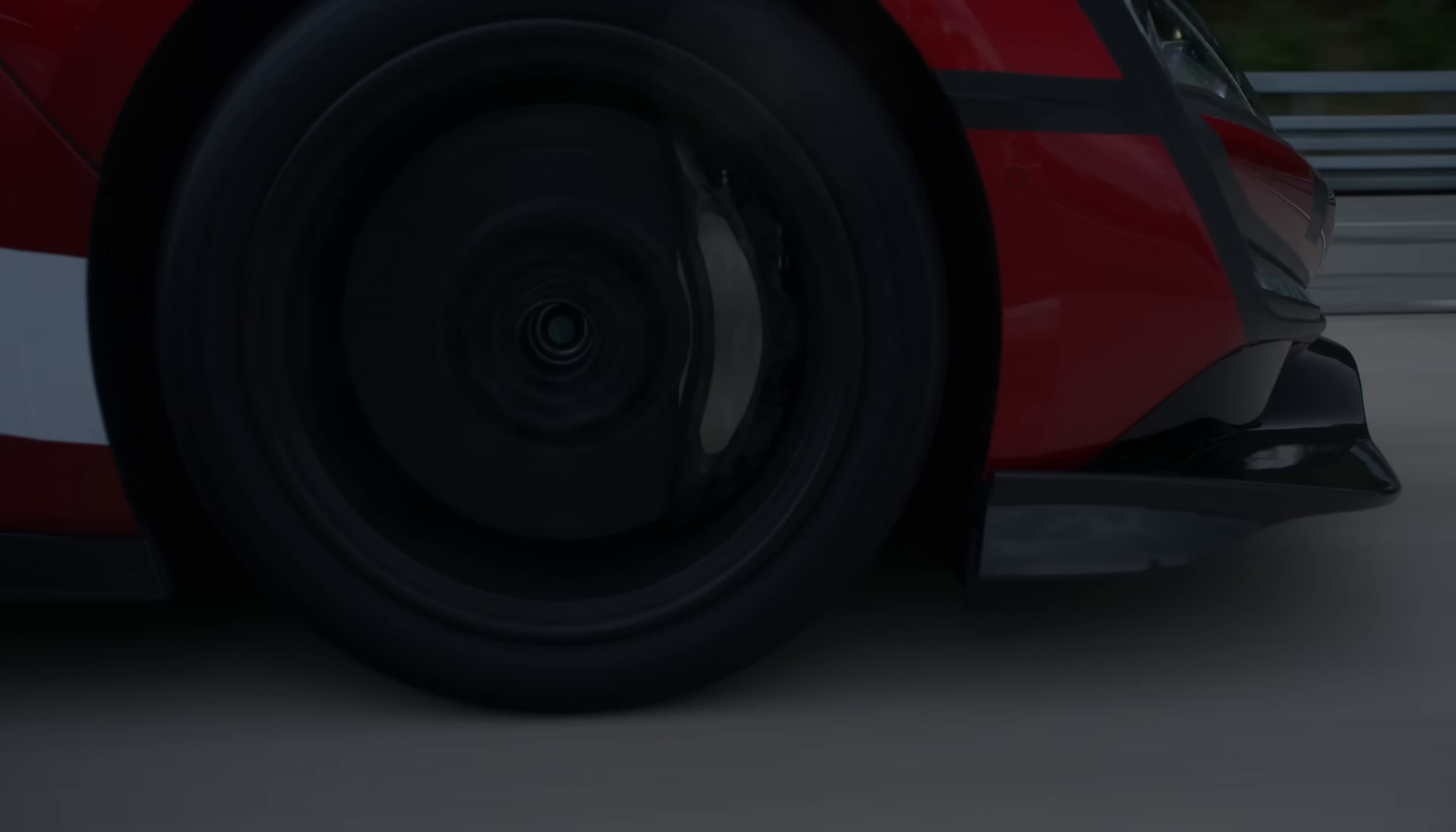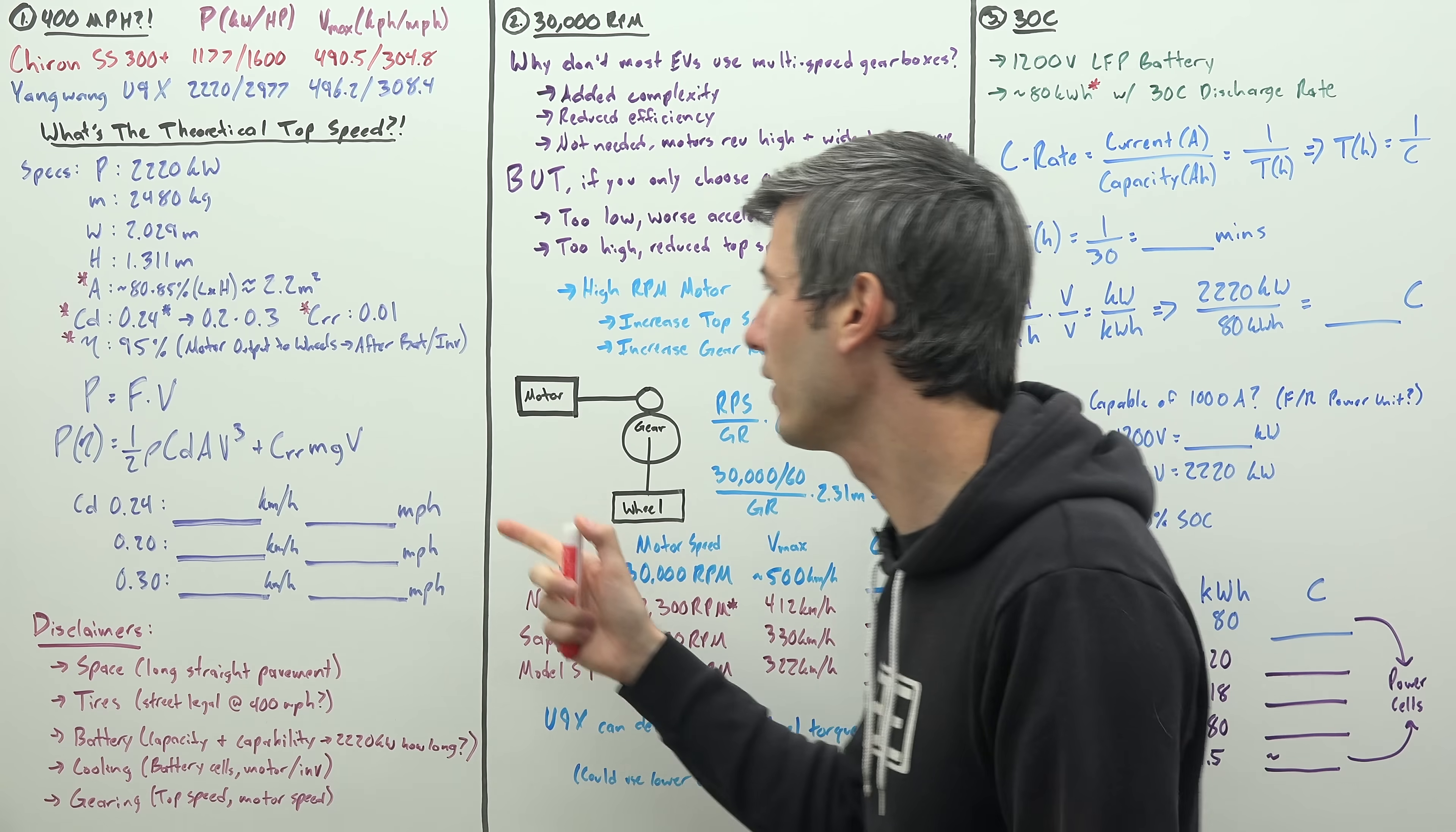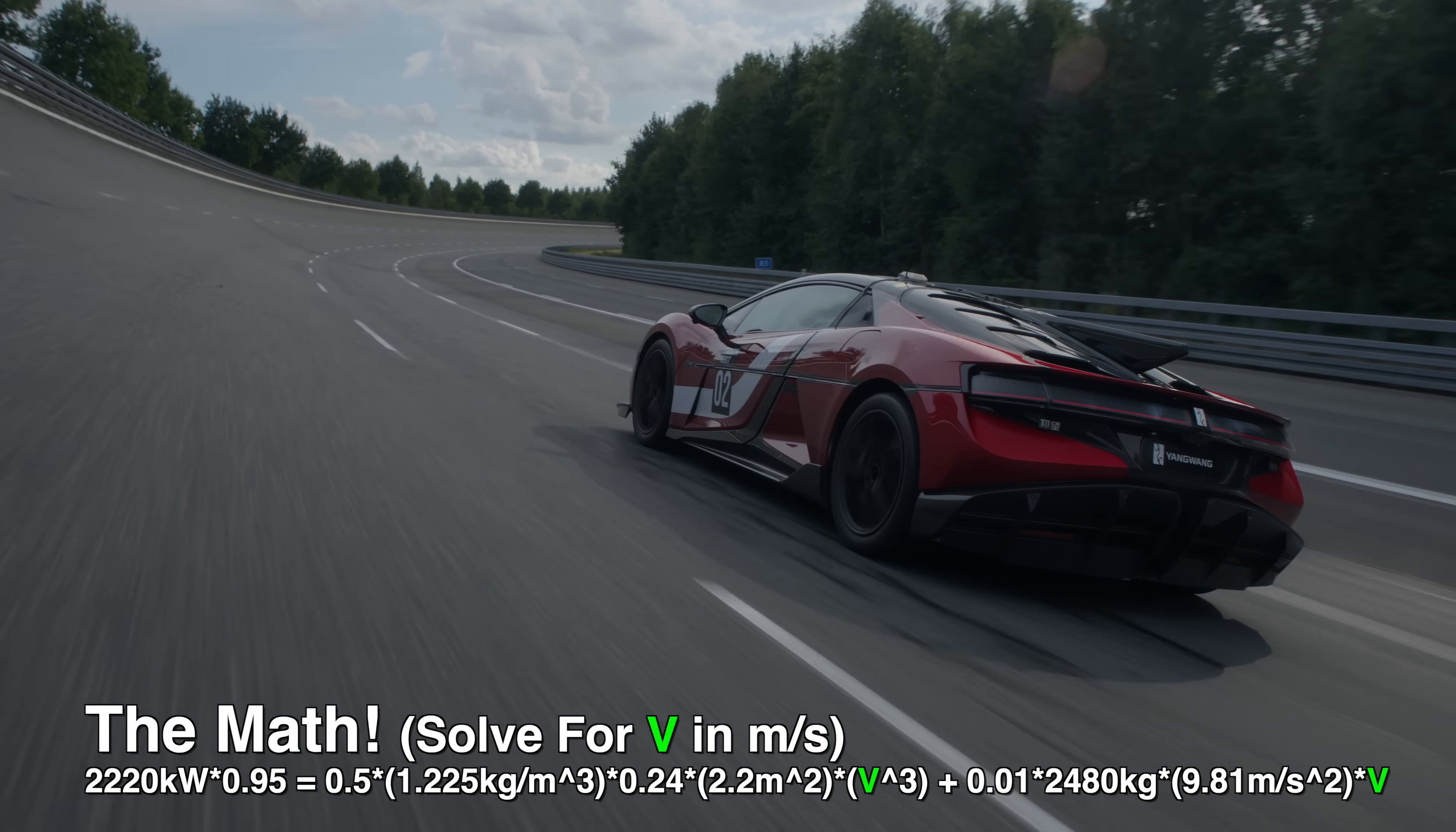And then as far as tires, we don't have to be crazy accurate here, because honestly at these speeds, aerodynamic drag is what's playing the biggest role. And then for efficiency, we're going to say 95% of the motor's output makes it to the wheels. Now remember, this is after it's gotten energy from the battery, it's gone through the inverters, and it's gotten to the motor, that quoted output being 2220. So we're going to say 95% of that actually reaches the wheels. So we plug in the numbers, and we solve for velocity, and what do we get?